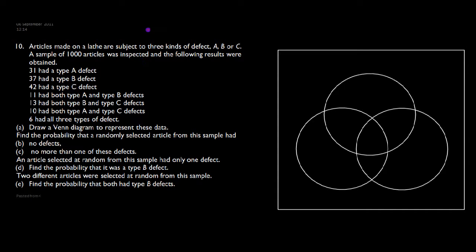Okay, in our tenth question we've got a Venn diagram problem. We have all this information about three kinds of defects.